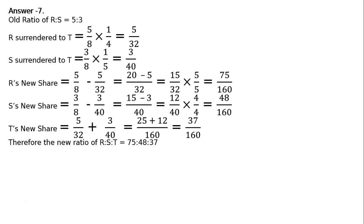Therefore, the new ratio of R is to S is equal to 75 is to 48 is to 37. 75 is to 48 is to 37. This is the new ratio of R is to S is to T.